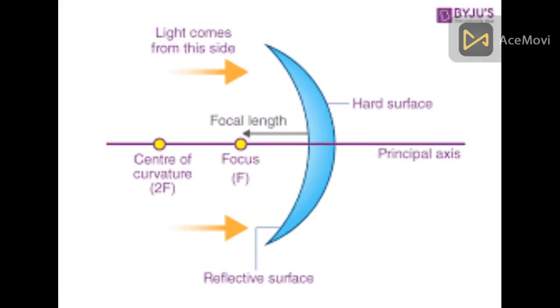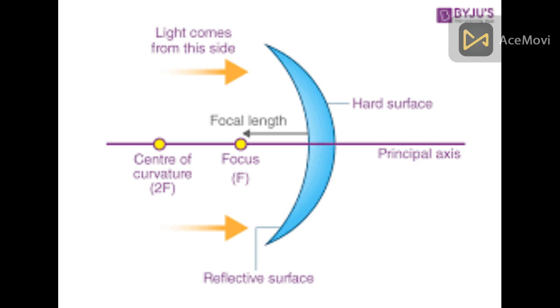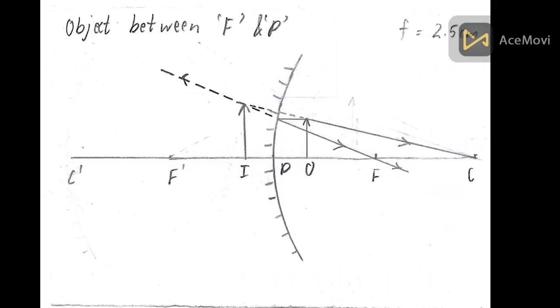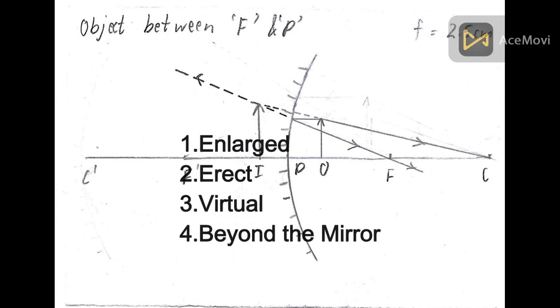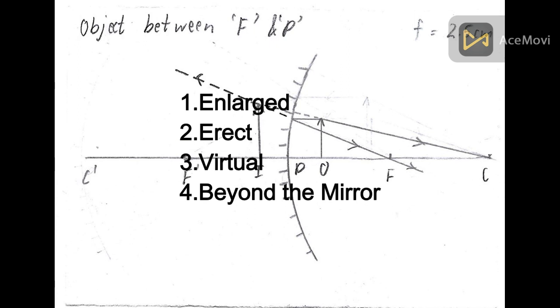Let us see how we can plot various ray diagrams for concave mirrors depending upon the position of the object along with the characteristics of the image. In a concave mirror, when the object is placed between the mirror and f, the image is formed beyond the mirror. The image is enlarged, erect, and virtual.